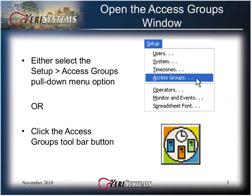Open the access group window from either the setup pull-down list and select Access Group, or from the toolbar icon button.